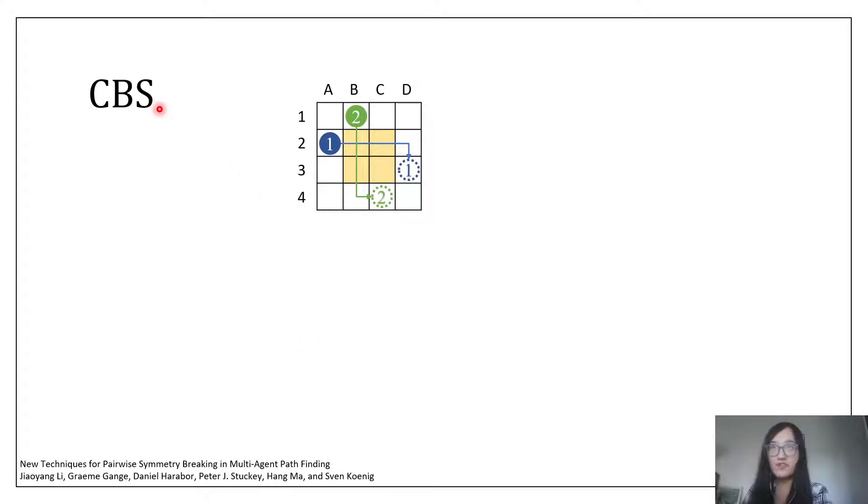Now let me give you an example about how these strategies work and what the symmetry looks like. CBS is an optimal MAPF solver. It first plans a shortest path for each agent by ignoring other agents. Like here, these two shortest paths collide at location B2 at time step 1.